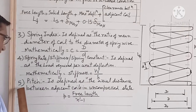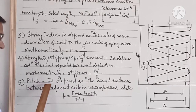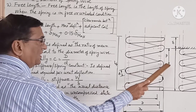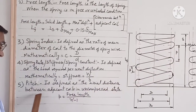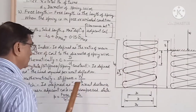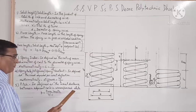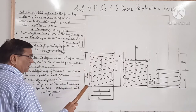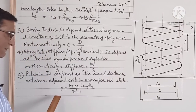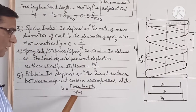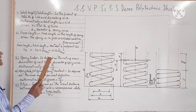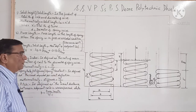Fifth is pitch. It is defined as the axial distance between two adjacent coils in uncompressed or unloaded condition. Mathematically, P is equal to free length upon (N' − 1), where N' is the total number of turns.